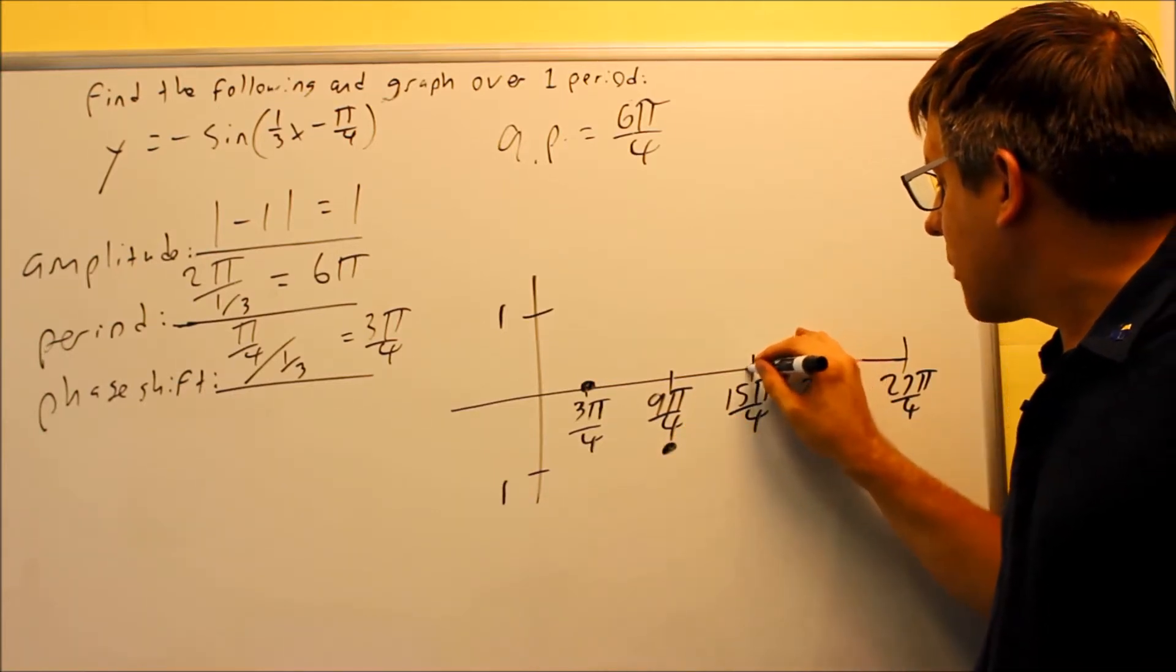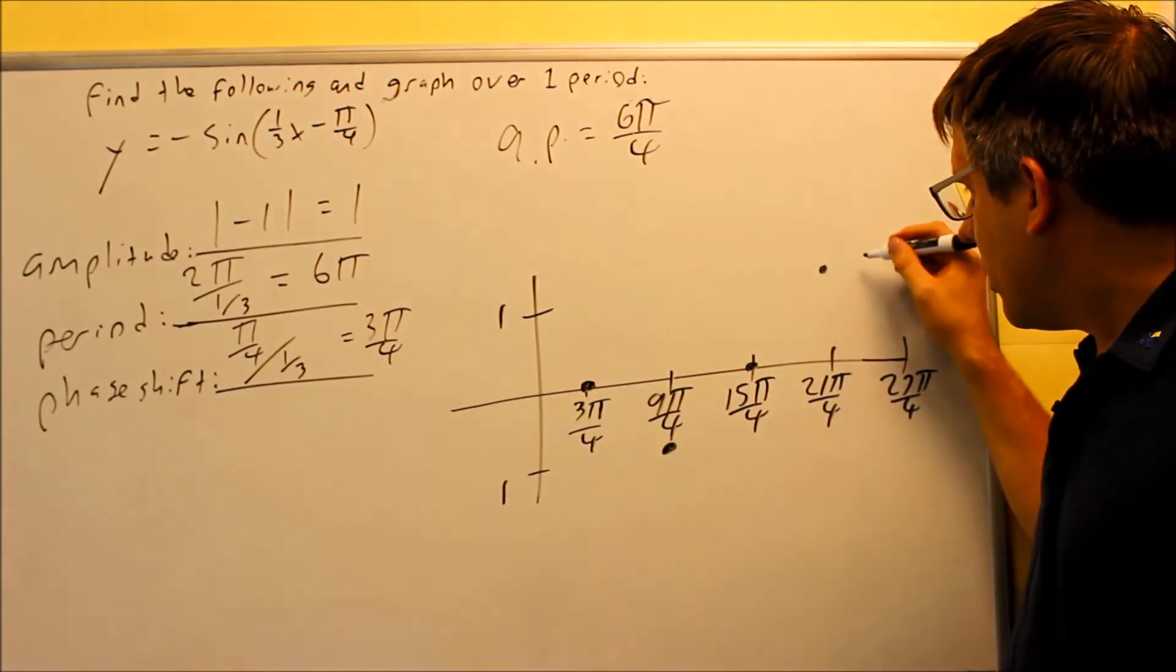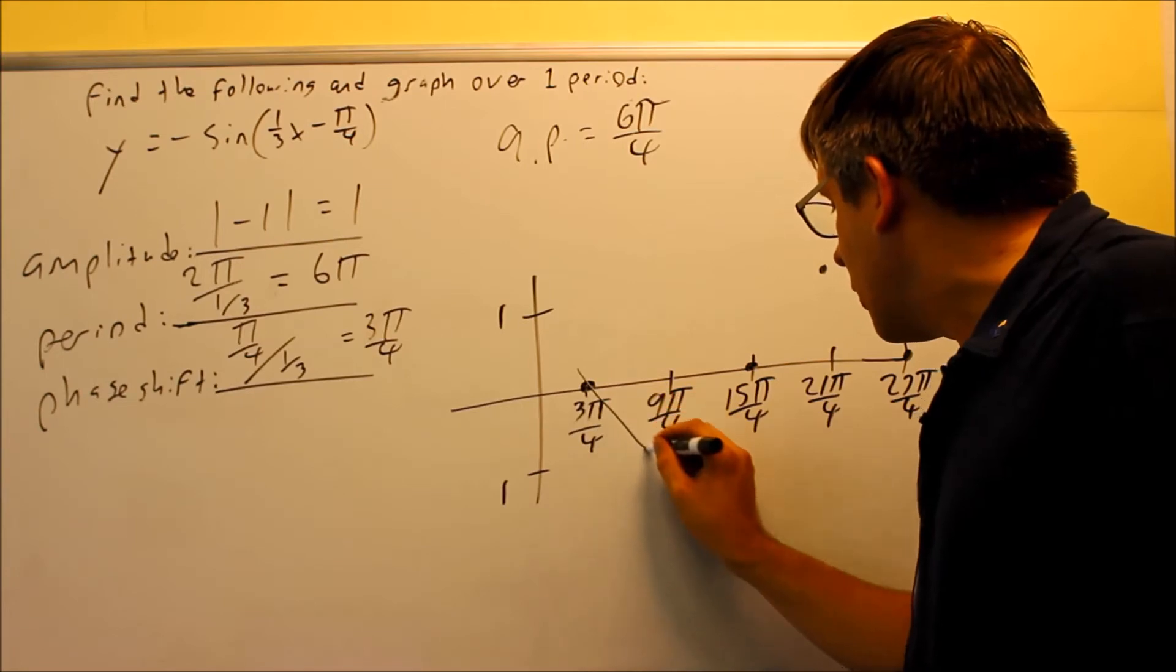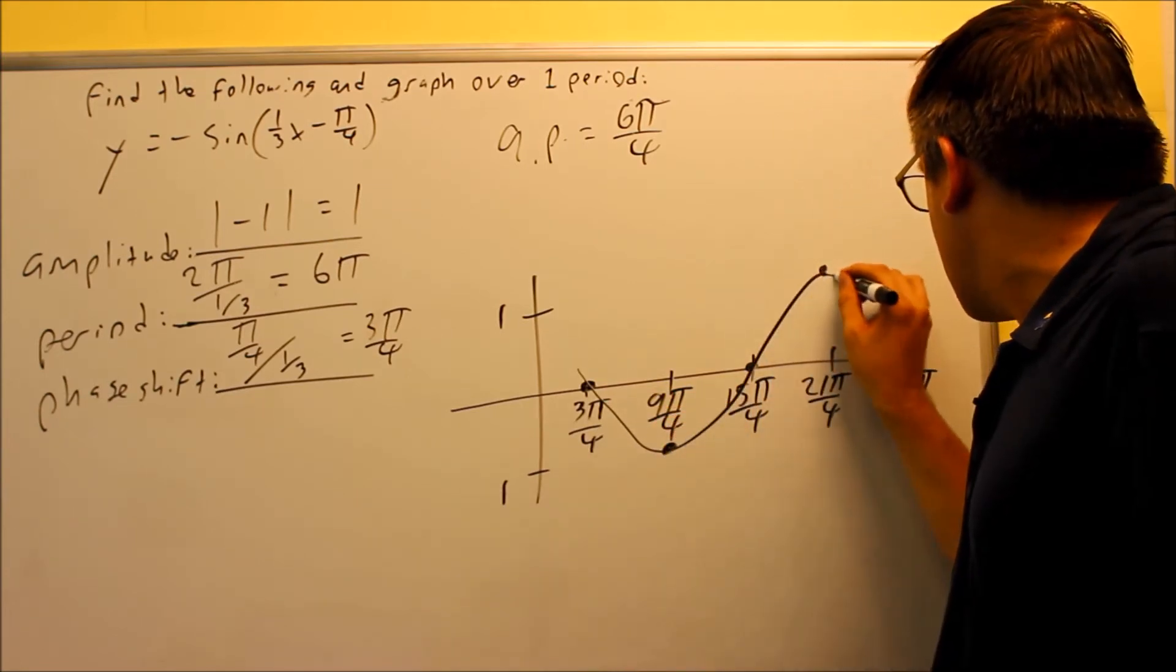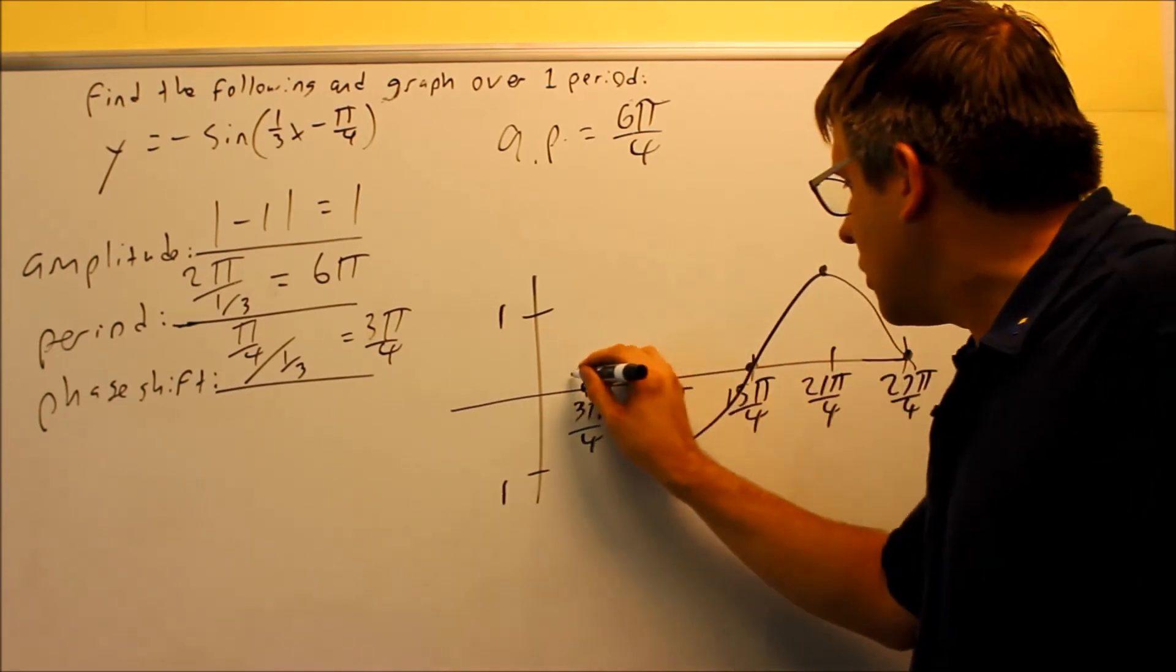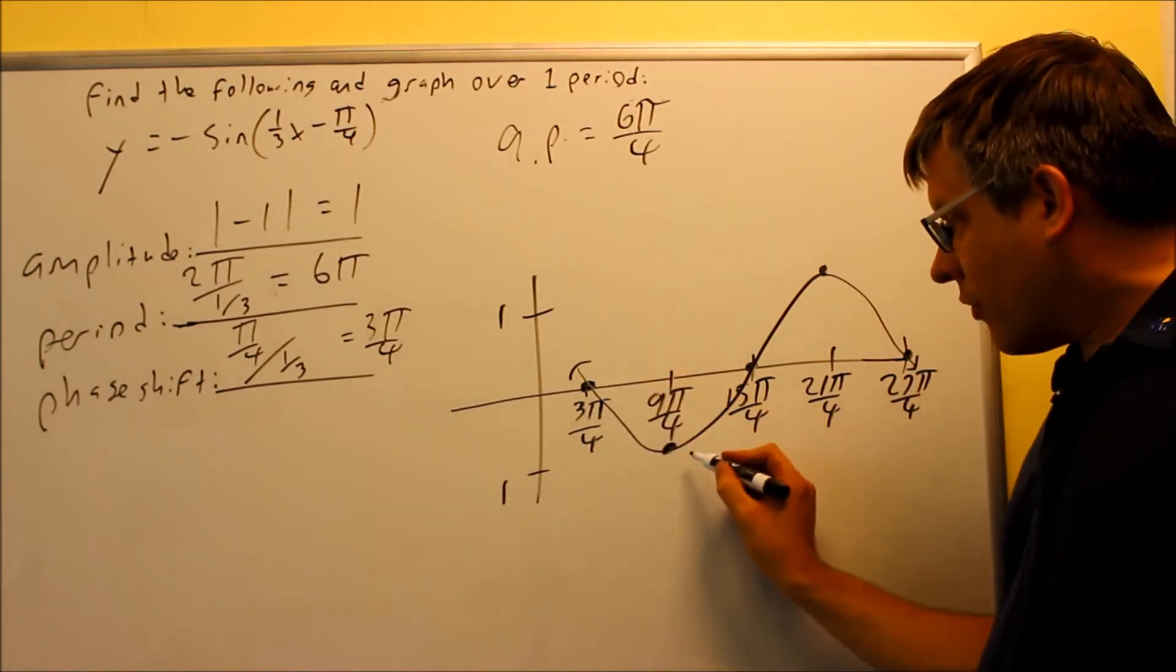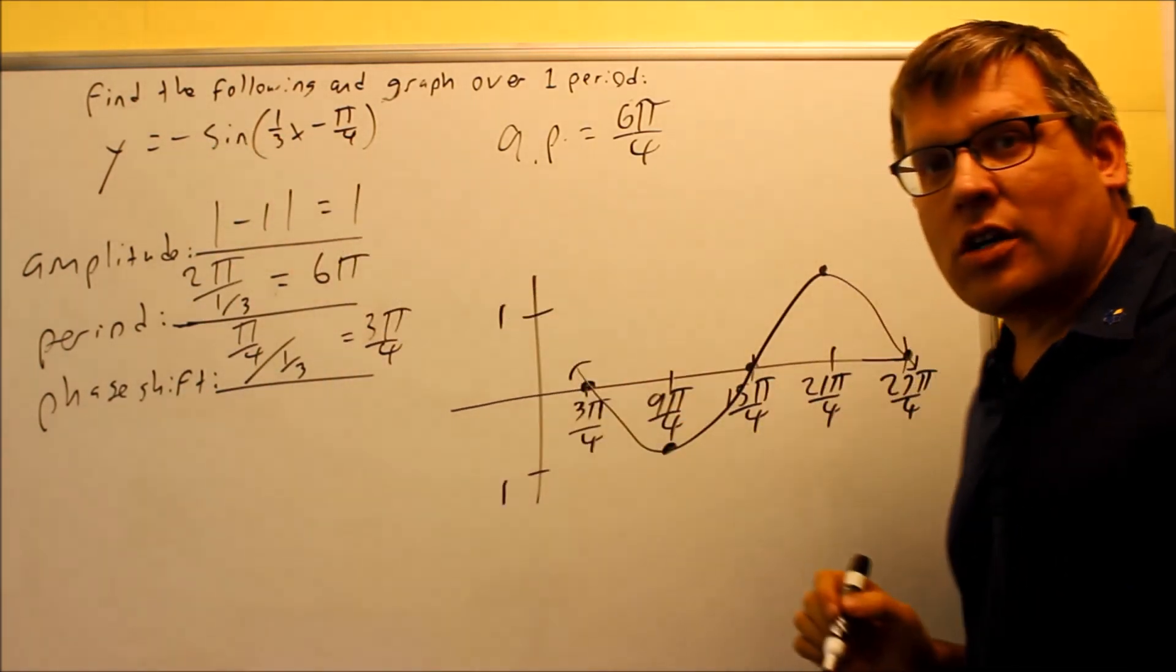Then it's going to go back up to the x-axis. It's going to go back up to 1, and then back down to the x-axis again. The graph itself is going to look something like this. That would be considered one cycle. Again, we had to go down first because of the negative sign in front.